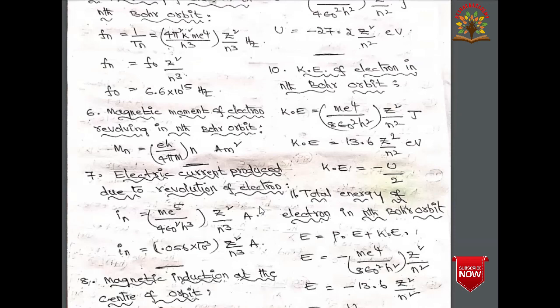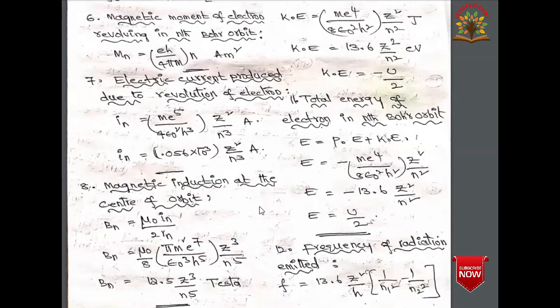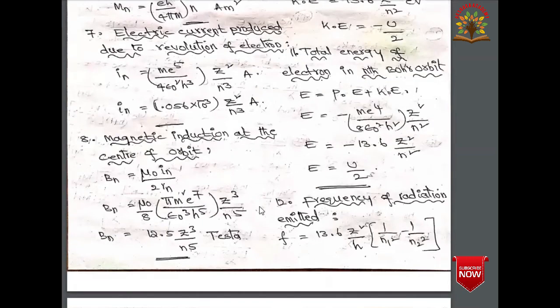The magnetic moment of an electron revolving in the nth Bohr orbit is M_n = (eh/4πm) × n ampere·m². When n = 1, eh/4πm is called the Bohr magneton. The electric current produced due to revolution of an electron in the nth Bohr orbit is I_n = me⁵/(4ε₀²h³) × Z²/n³, or I_n = 1.056 × 10⁻³ × Z²/n³ amperes.